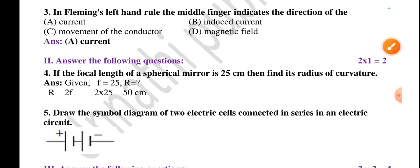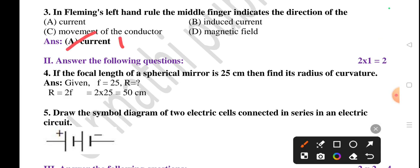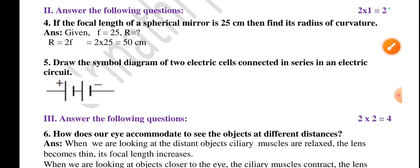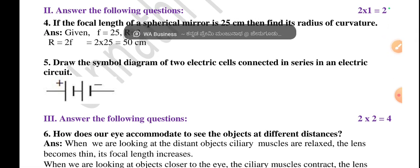Question number three: In Fleming's left hand rule, the middle finger indicates the direction of current. Option A is the right answer. Current. The thumb indicates the movement of the conductor, then forefinger indicates magnetic field.